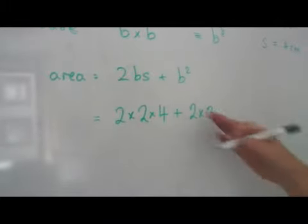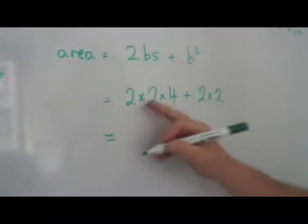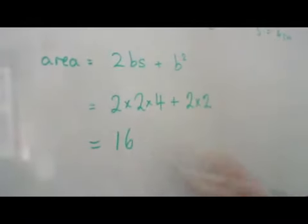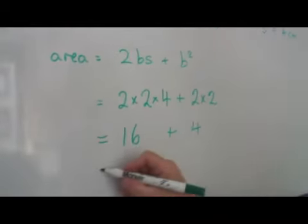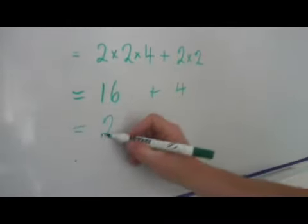Now, remember multiplication before addition, so we have to multiply these out. Two times two times four, I think you'll find is sixteen, plus two times two is four. So, the total area is sixteen plus four, which is twenty.